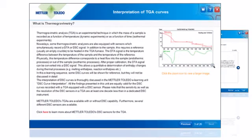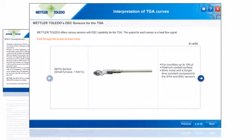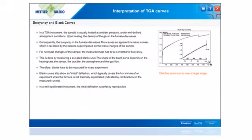The first unit explains the concept of thermogravimetry along with the various DSC sensors of Mettler Toledo. It also explains the concepts of buoyancy and blank curves.